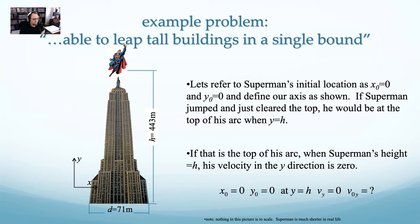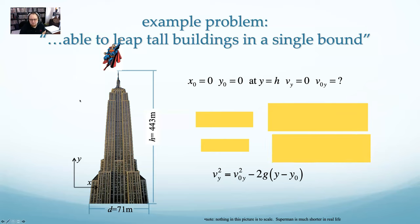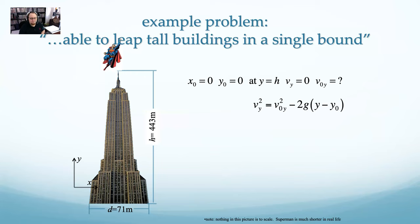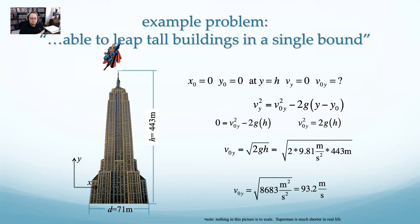I'll pull up my kinematics equations for two-dimensional motion. Ignoring X, I don't need the X equations. For Y, no time is mentioned, so I'll use the time-independent equation: V_y² = V0y² + 2a(y − y_naught). Plugging in zeros — V_y is 0, Y-naught is 0, Y is h — I can add 2gh to both sides, then square root both sides. Shoving in the numbers and taking the square root, Superman needs a V0y of 93.2 meters per second to reach that height.